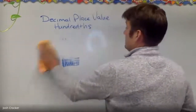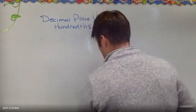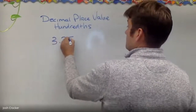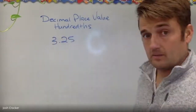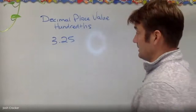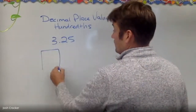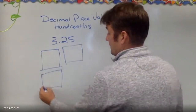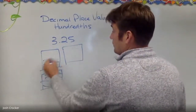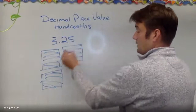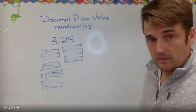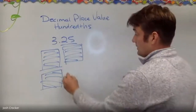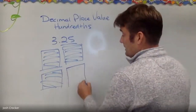Let's look at another number: three and twenty-five hundredths. What does that number mean? That means three wholes — one, two, three — complete, full, hundred percent. And then I have part of the next piece, so here's my fourth piece.